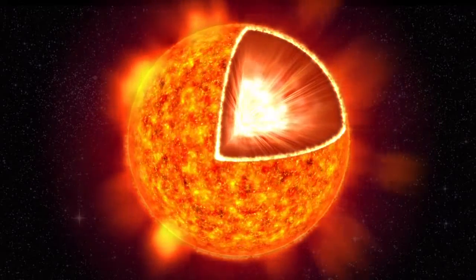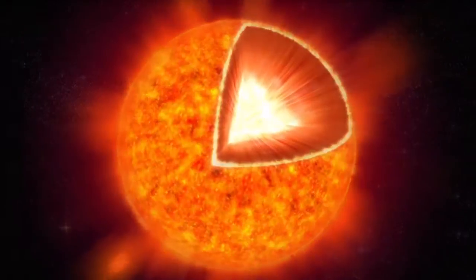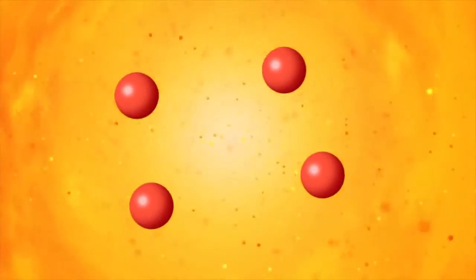The energy is created deep inside the core of the Sun. Here the temperature is over 14 million degrees, and the pressure so enormous that hydrogen atoms are squeezed together into another element, helium. This nuclear reaction releases energy.